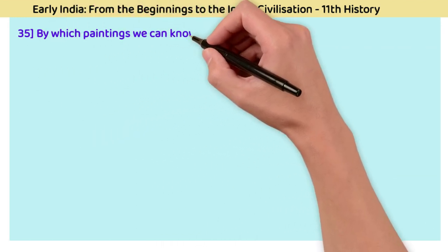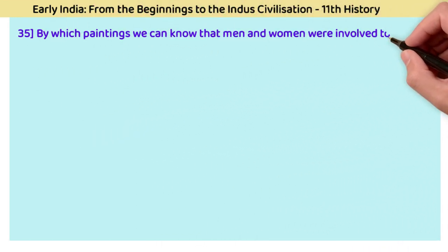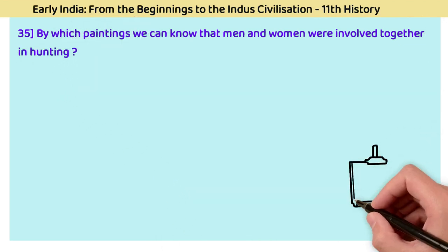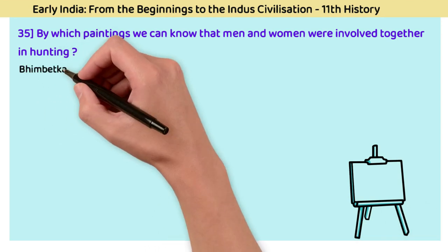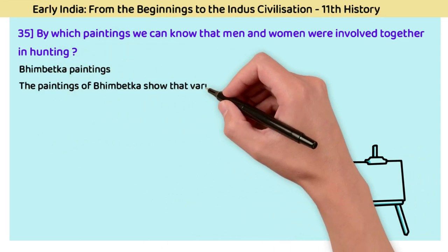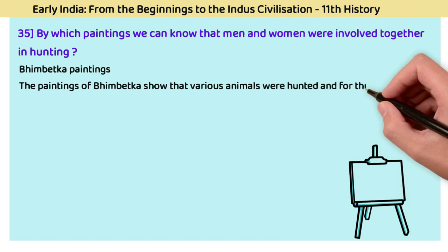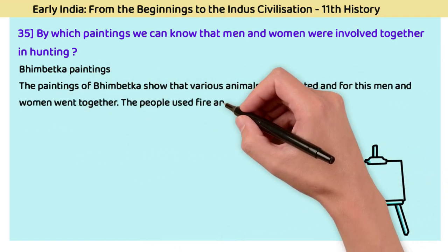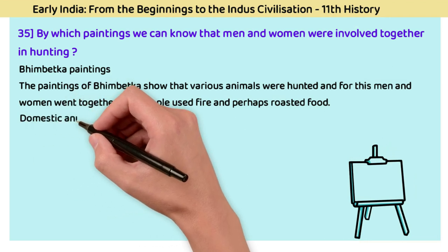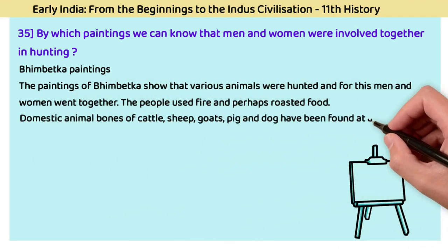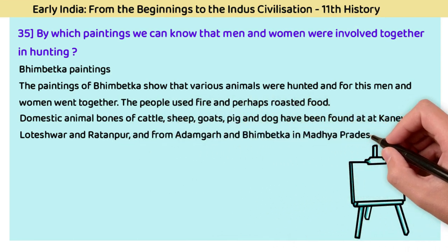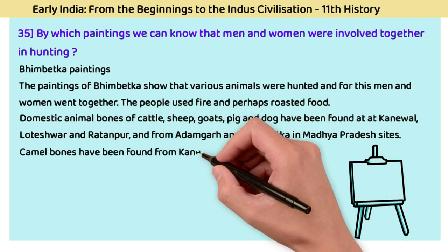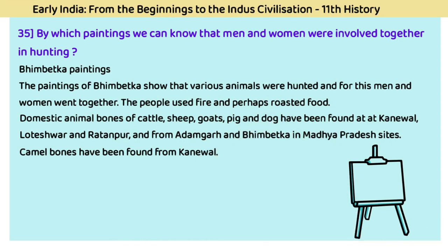Question 35: By which paintings do we know that men and women were involved together in hunting? The answer is Bhimbetka paintings. The paintings of Bhimbetka show that various animals were hunted and men and women went together for this. People used fire and perhaps roasted food. Domestic animal bones — cattle, sheep, goat, pig, and dog — have been found at Kaneval, Loteshwar, and Ratanpur, and from Adamgarh and Bhimbetka in Madhya Pradesh. Camel bones have also been found at Kaneval.